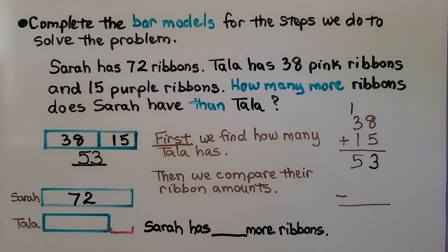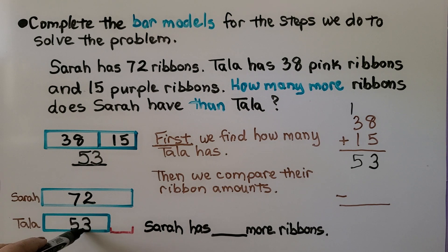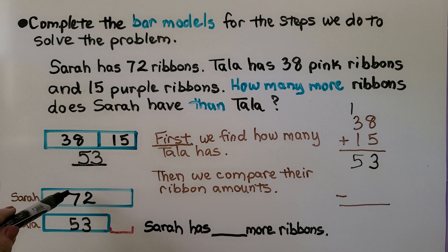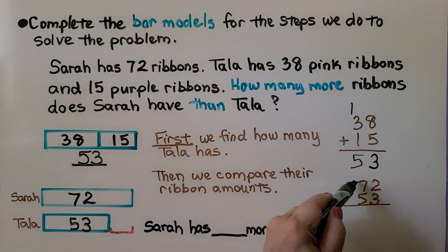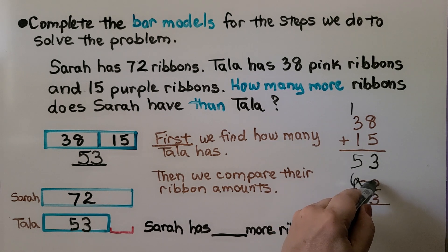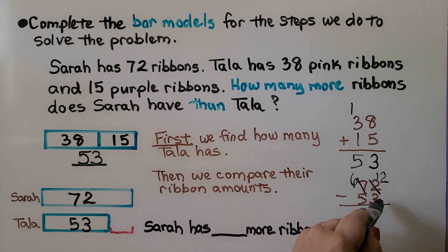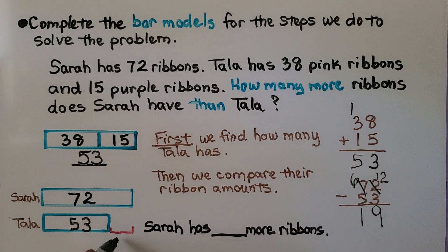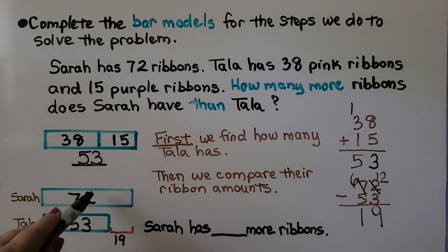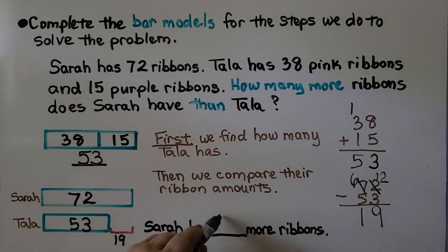They're pink and purple. Then we compare their ribbon amounts: Sarah has 72 and Tala has 53. The difference between 72 and 53 will be our answer. We have two bar models to show we're comparing two different numbers. We can use subtraction: 72 minus 53. We start with the ones — 2 ones minus 3, not enough, so we regroup from the tens: the 7 becomes a 6 and the 2 becomes a 12. 12 minus 3 is 9, and 6 tens minus 5 tens is 1 ten. That gives us 19 — Sarah has 19 more ribbons.